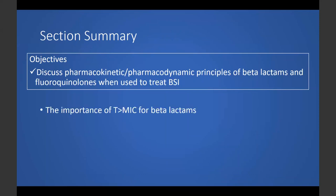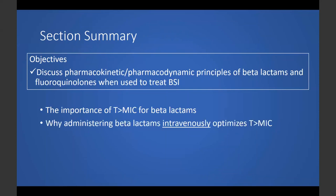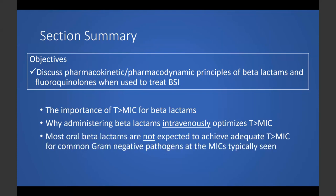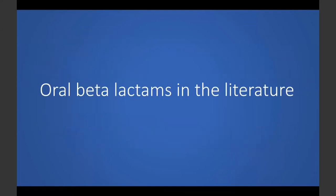To briefly summarize section one: we talked about the importance of time above MIC for beta-lactams and why hitting our PK/PD target matters for serious infections like gram-negative bloodstream infections. We saw why giving beta-lactams intravenously optimizes time above MIC, the drastic difference between oral and IV cephalexin, and why fluoroquinolones don't face the same limitations orally. In the pharmacokinetic model, given typical MICs, most oral beta-lactams would not be expected to achieve adequate time above MIC. From a PK/PD perspective, the case for oral beta-lactams doesn't seem very promising — but this is in stark contrast to what we see in the primary literature.